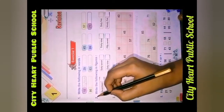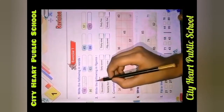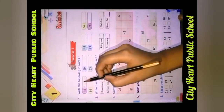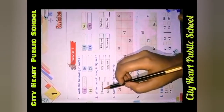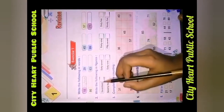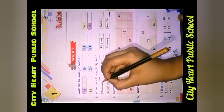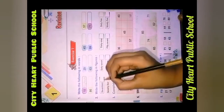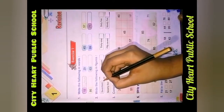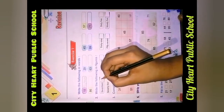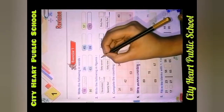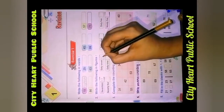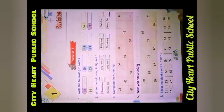Next, question number 2: Write the following in figures. Jaise humne 18 ko words mein likha hai, isi tarah ye words mein likha hua hai. So this is 17, it will be written as 17. And 67 as this. Isi tarah aapko likhna hai.